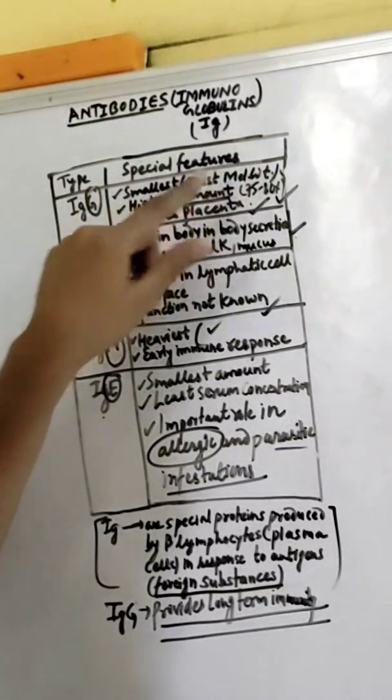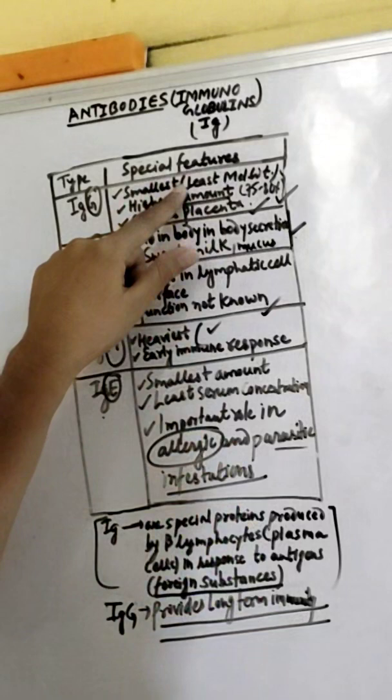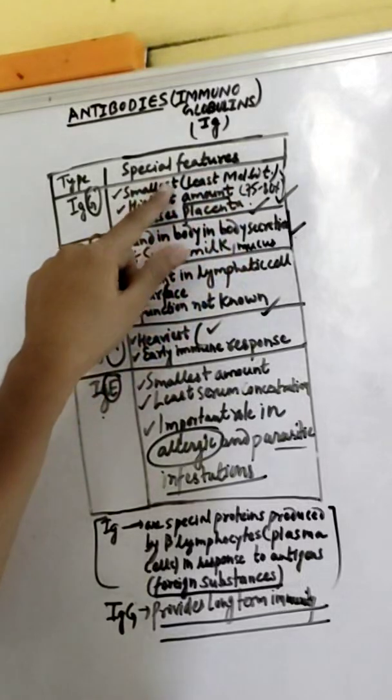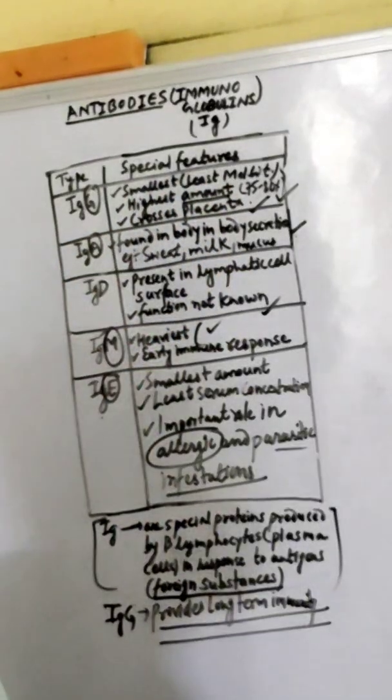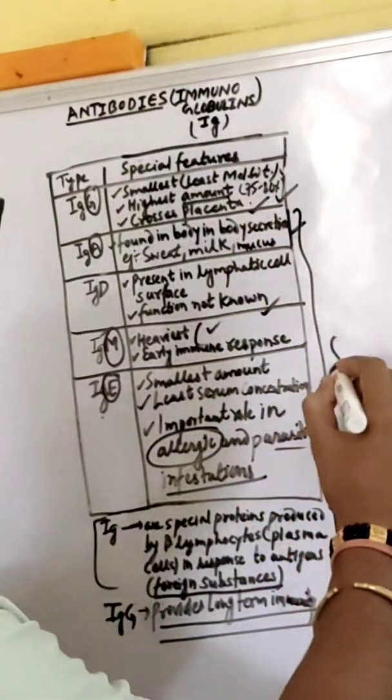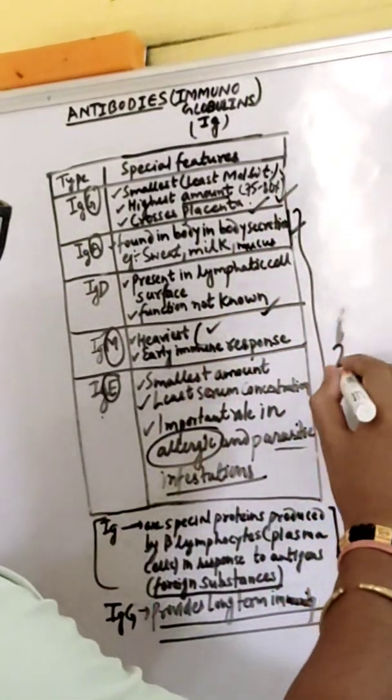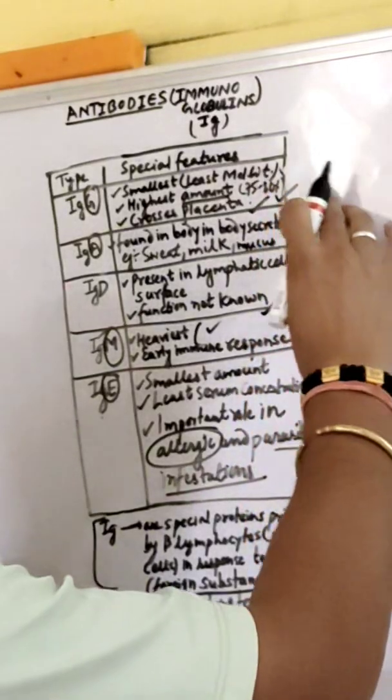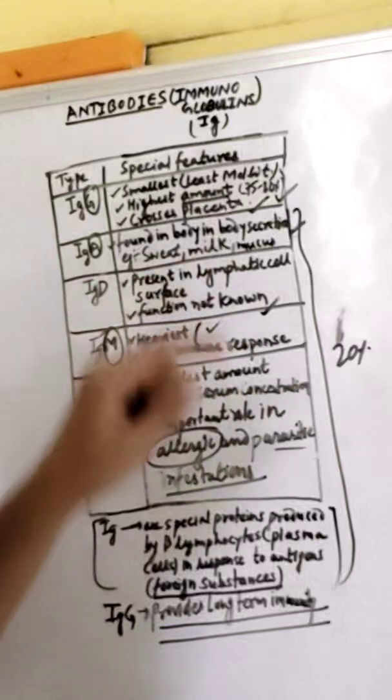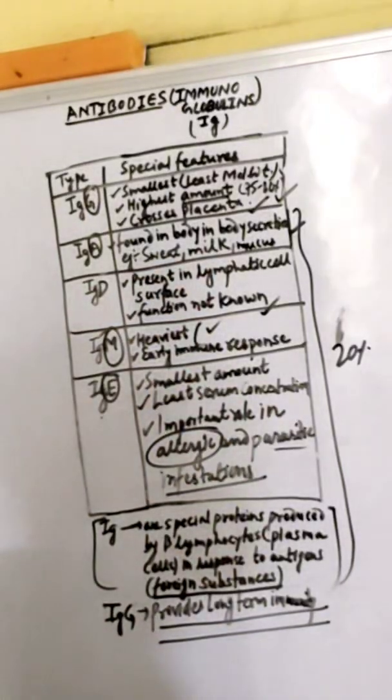IgG is the smallest in size but found in the highest amount, about 75 to 80 percent. It crosses the placenta and provides passive immunity to the baby.